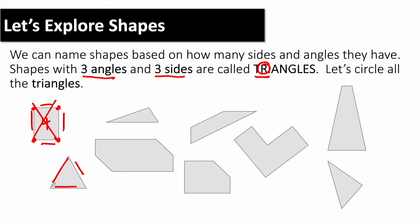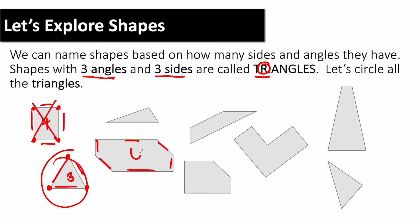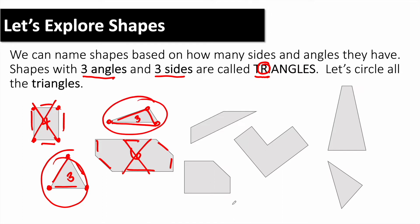Count the sides — how many? Three. Count the angles — how many? Three. So it's a triangle because triangles have three sides and angles. This one is six, not a triangle. This has three sides and angles, so it's a triangle. You get the idea.